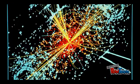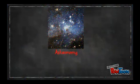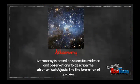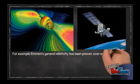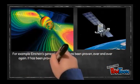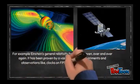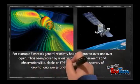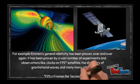This leads us to another major difference between astronomy and astrology, which is astronomy is based on scientific evidence and observations to describe the astronomical objects, like the formation of galaxies. For example, Einstein's general relativity has been proven over and over again. It has been proven by a vast number of experiments and observations, like clocks on GPS satellites, the discovery of gravitational waves, and many, many others.